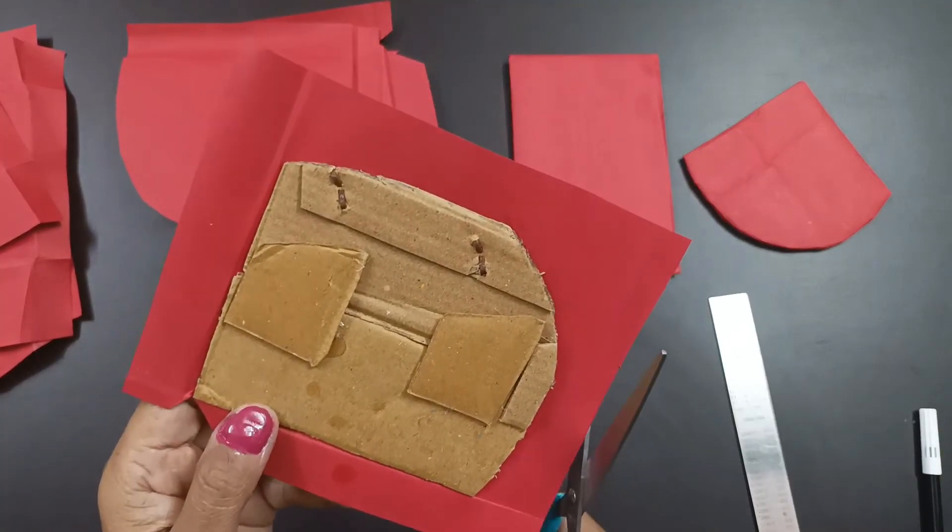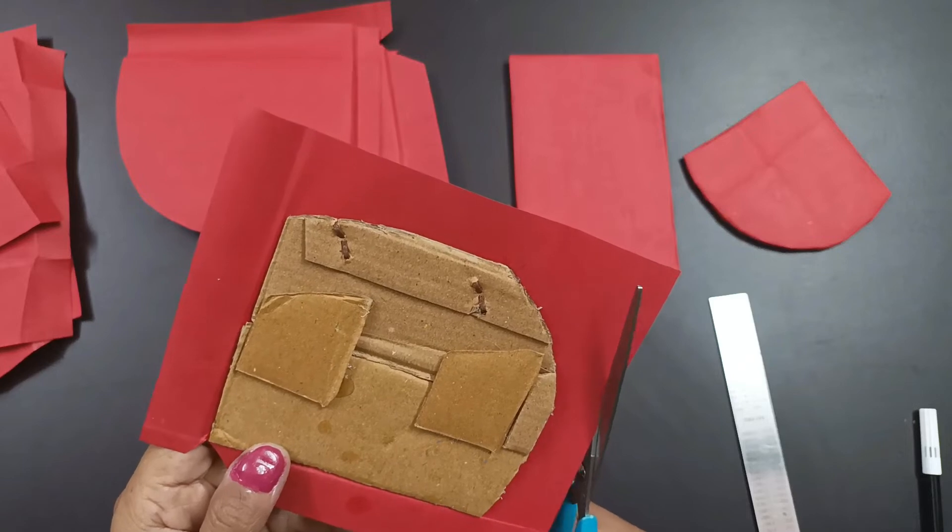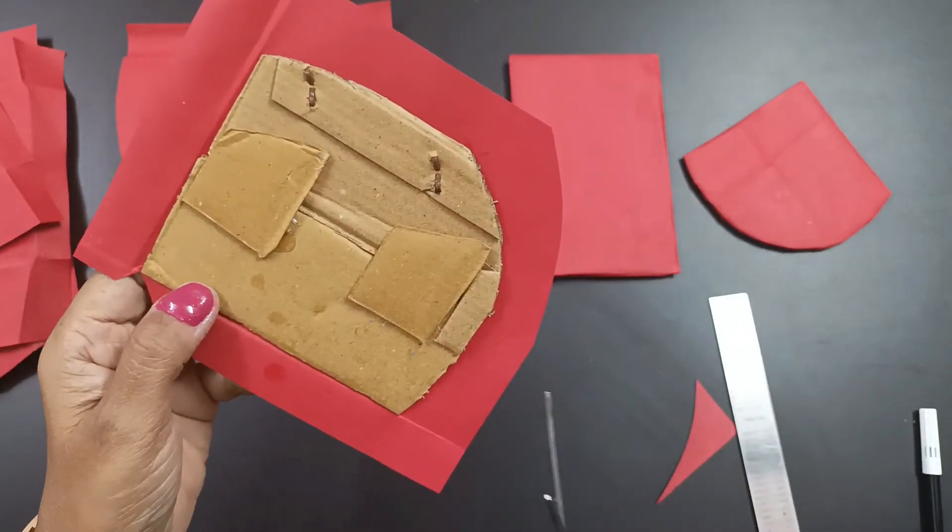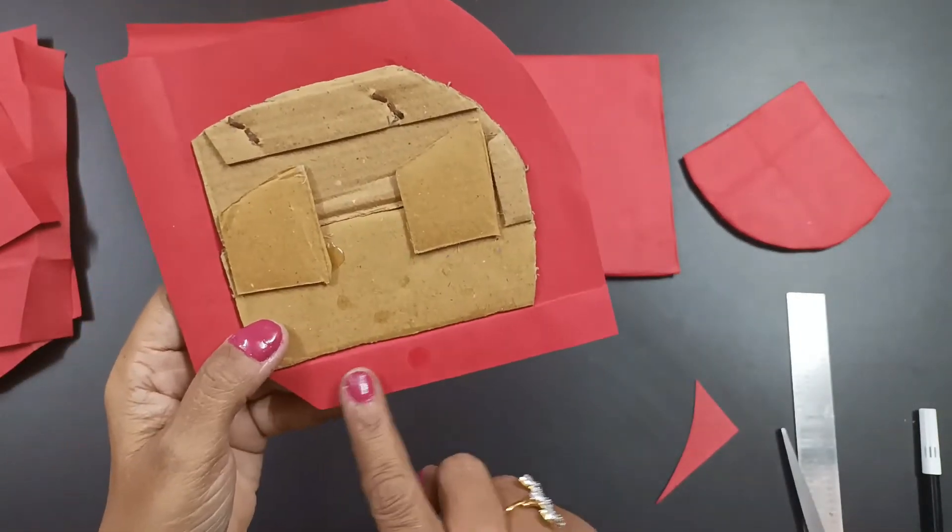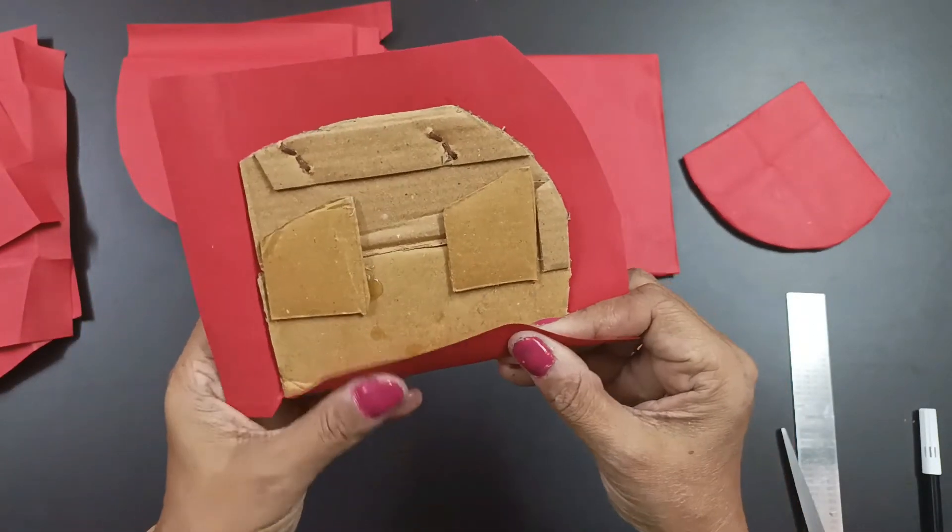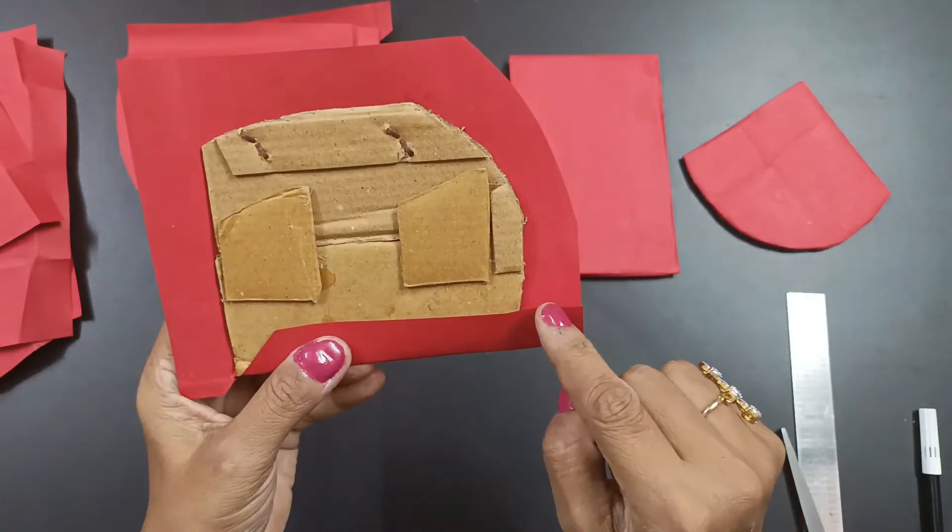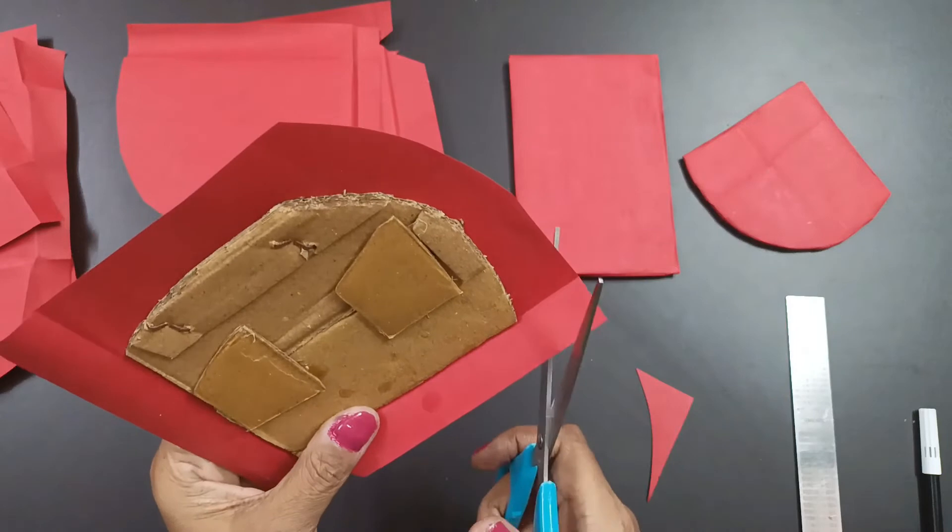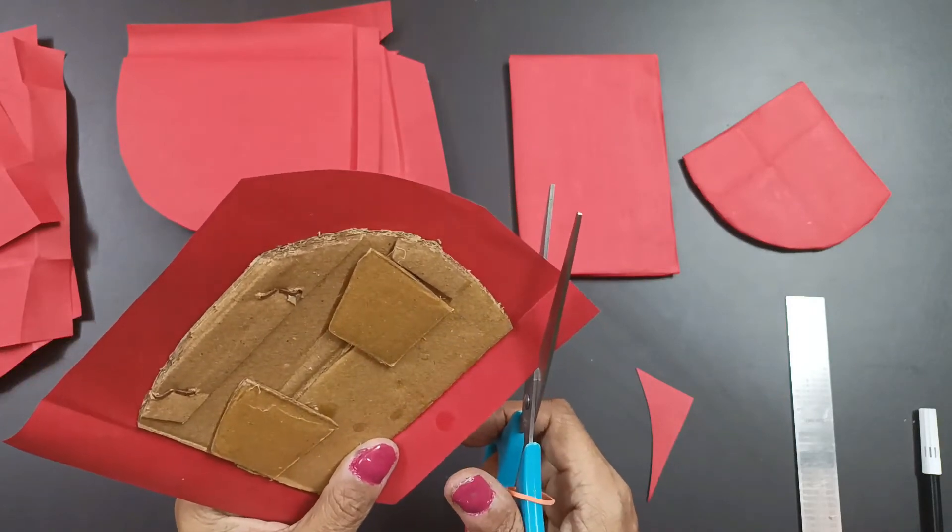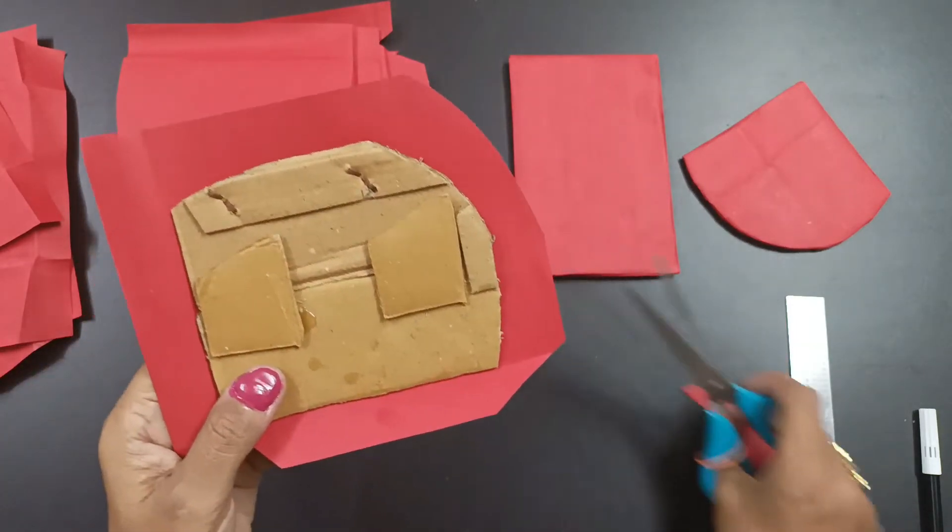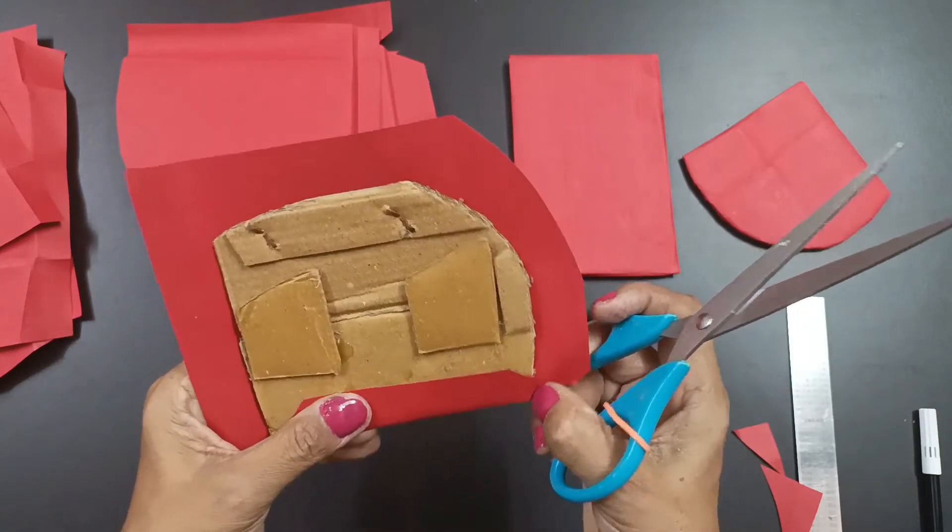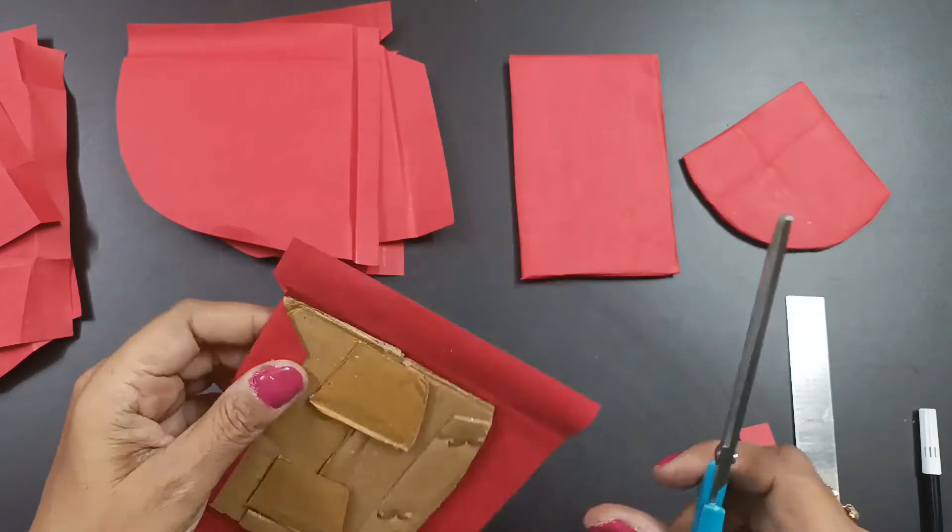Now I'll stick and make the sets ready. This is a semicircle. I will just cut the round shape, half-round shape, and then first apply Fevicol over here like this. I will cut a little bit over here also.